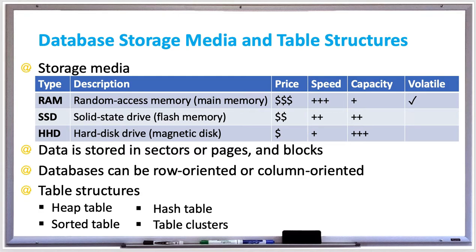There are two main types of databases when data is considered: row and column-oriented databases. Row databases organize data by record, keeping all the data associated with the record next to each other in memory. Row-oriented databases are the most common way of organizing data, and relational databases like MySQL commonly use row-oriented storage, optimized for reading and writing rows efficiently.